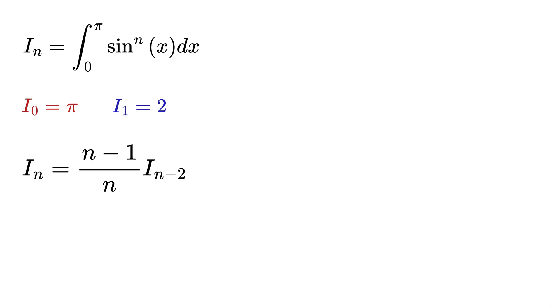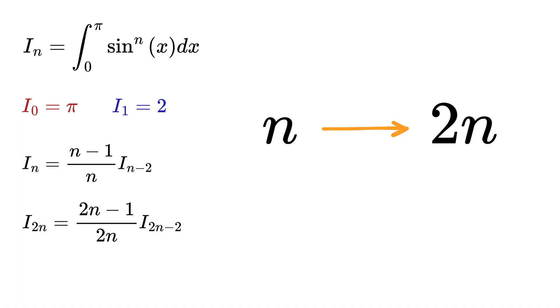Now replace n with 2n on both sides to rewrite this recurrence relation for even powers. Similarly, we can also consider it just for odd powers by replacing n with 2n+1 here.